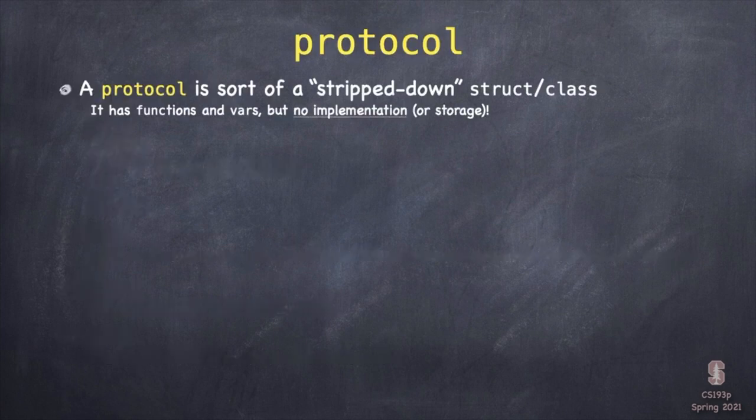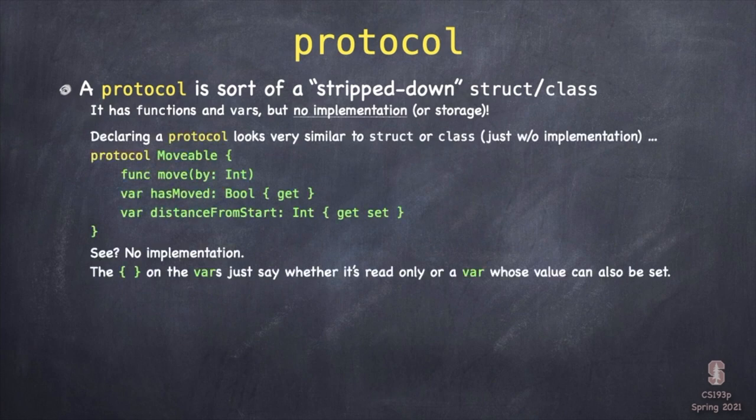So, protocols. A protocol is sort of a stripped-down struct or class. For example, I've got a protocol here called Movable. You can see it's got funcs and vars, but none of those funcs and vars have any implementation. The little curly braces you see after the vars are just saying whether that var is a get-only var or a get-and-set var.